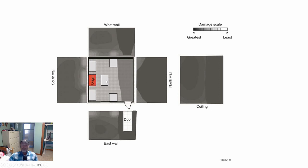This is a chart taken from NFPA 921, the guide for fire investigation. Looking at the door on the east wall in the floor plan view, you can see the ventilation causing a momentum effect — air blows in, and you see more damage on the opposite wall. This is typical for any broken window or propped-open door.